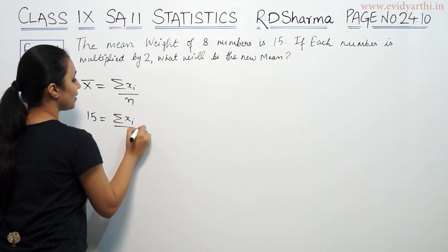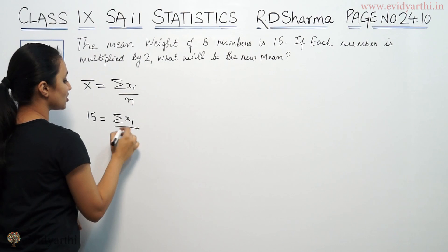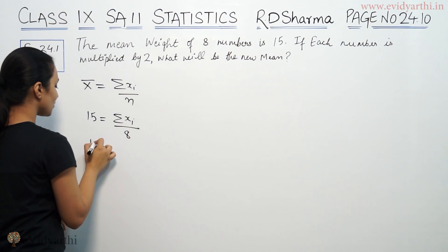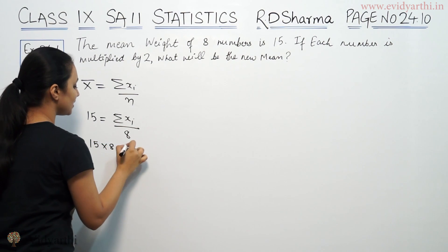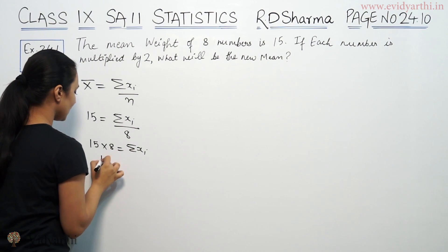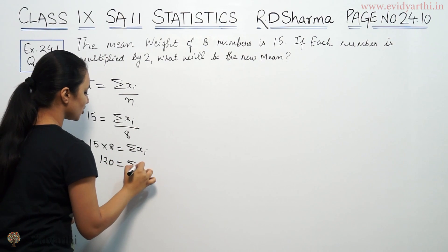Observation sum we don't know but number of observations is 8. So, this will be 15 into 8 equals summation xi. That means 120 equals summation xi.